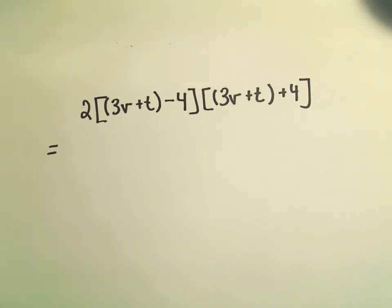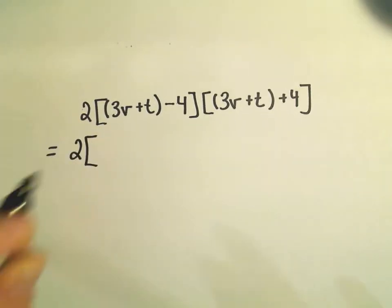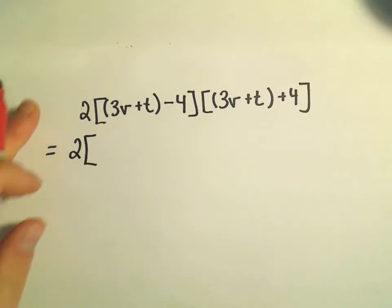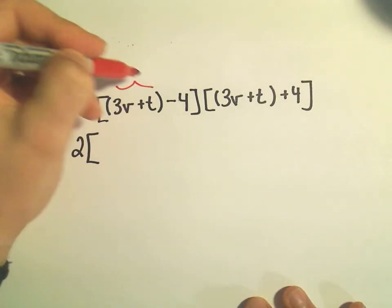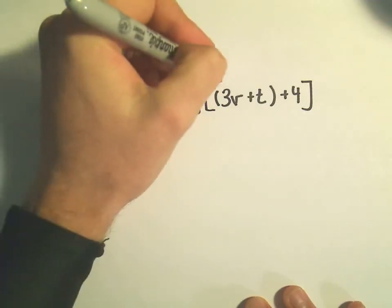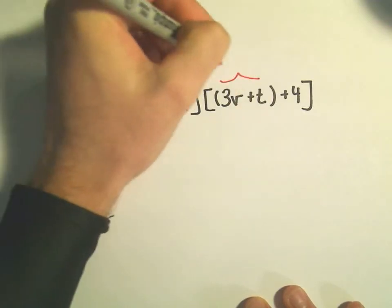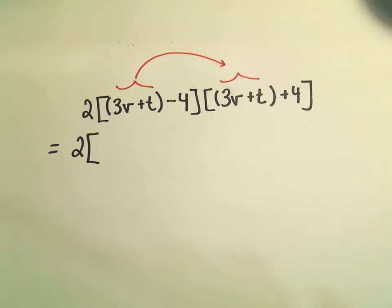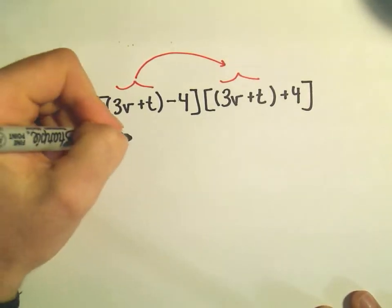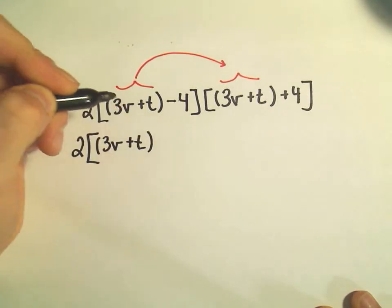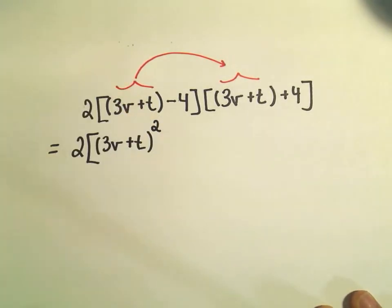But what I'm going to do instead is multiply everything inside the brackets first. So I'm just going to leave the 2 alone, and now we're just going to foil it out, distribute everything out. I'm going to take my 3v plus t and multiply that by the other 3v plus t. If we have 3v plus t times 3v plus t, that means we have 2 of them, so we would have 3v plus t squared.